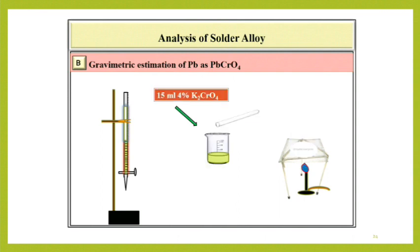To this hot solution, add 15 ml 4% K2CrO4. The supernatant solution will become orange-yellow. Add little excess of K2CrO4 if required to make the supernatant solution orange-yellow.